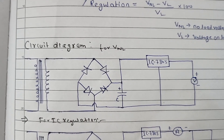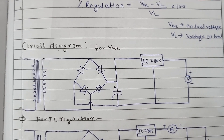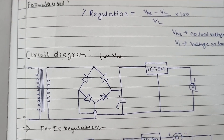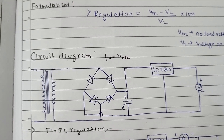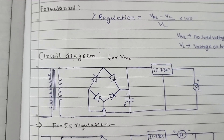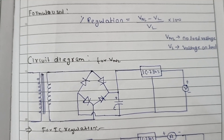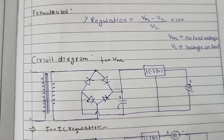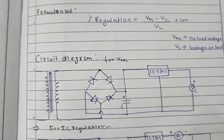This is our circuit diagram for VNL of IC 7805. According to this circuit diagram, we connect the experimental board circuit.